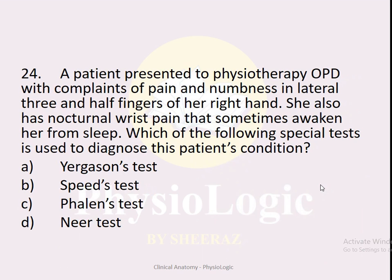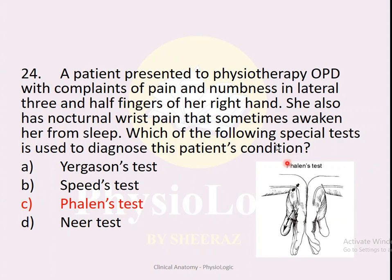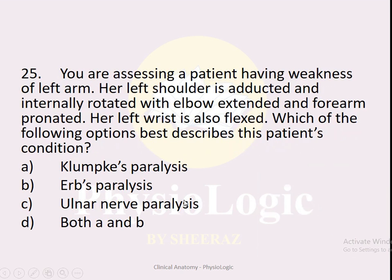MCQ number twenty-four: A patient presents with pain and numbness in the lateral three and a half fingers and nocturnal wrist pain that awakens her from sleep. Which special test is used to diagnose this condition? Options: A — Jergeson test, B — Speed's test, C — Phalen's test, D — Neer test. The correct option is C — Phalen's test. The condition is carpal tunnel syndrome, diagnosed using Phalen's test.